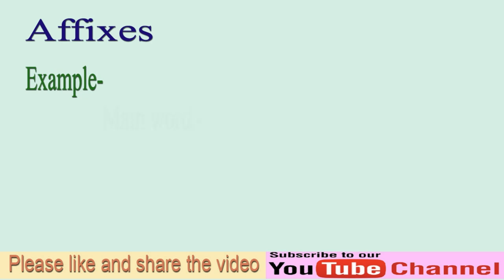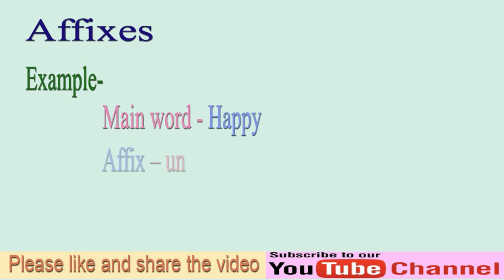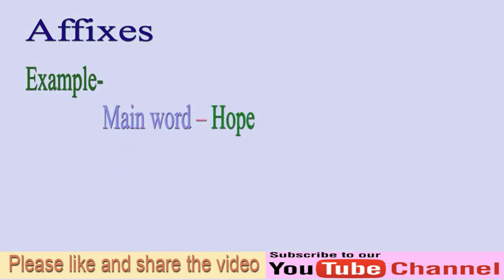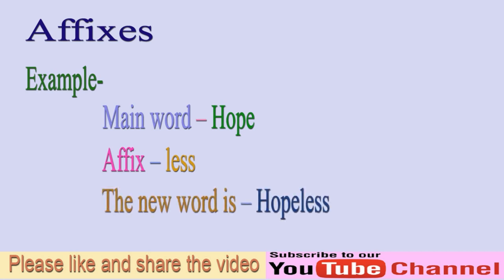Example. The main word is 'happy.' When we add the affix 'un' to the main word, the new word is 'unhappy.' The main word is 'hope.' When we add the affix 'less' to the main word, the new word is 'hopeless.'